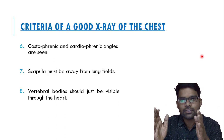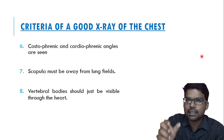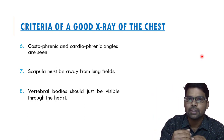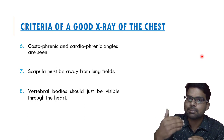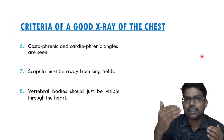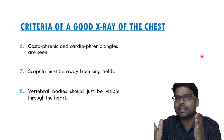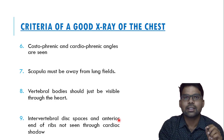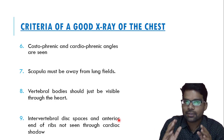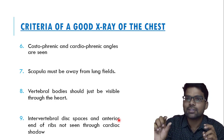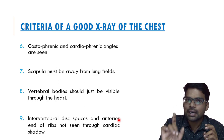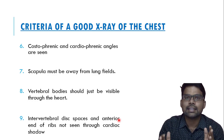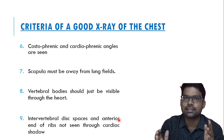The eighth point: vertebral bodies should be barely visible through the heart. If they are more visible, it implies over-exposure; if they are not visible, it is under-exposure. The ninth point: intervertebral disc spaces and anterior ends of the ribs should not be visible through the cardiac shadow. If they are visible, it implies over-exposure of the film. These nine points are the criteria for a good chest X-ray.